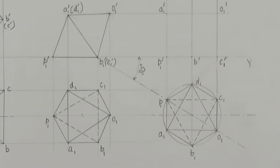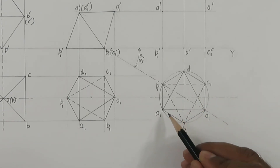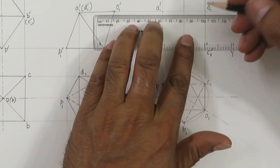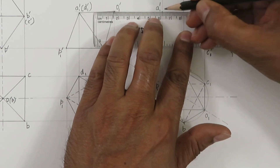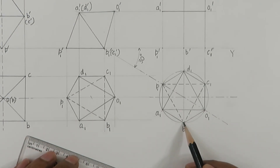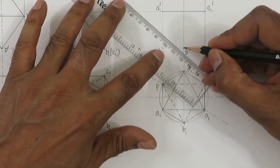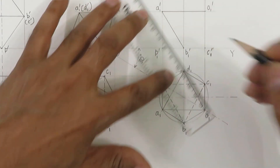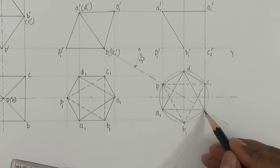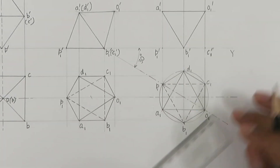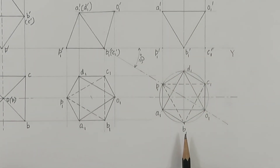Now let's identify the edges which are visible. This is the top view and we are looking from the front view — looking from this direction. In this view, the edge A1O1 is visible, so first we will draw A1 dash to O1 dash — this is the front view of this edge. Looking from this side, A1B1 will be visible, so A1 dash to B1 dash. And B1 dash to O1 dash will also be visible. So one of the triangles is complete.